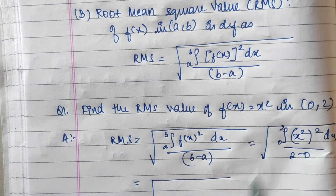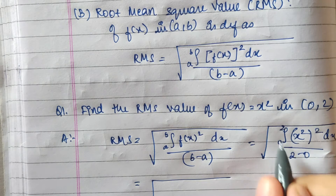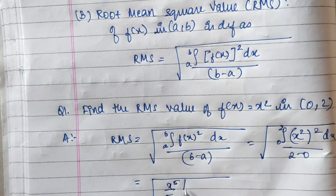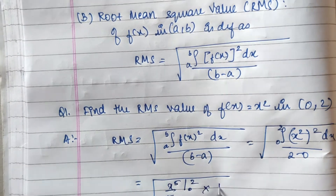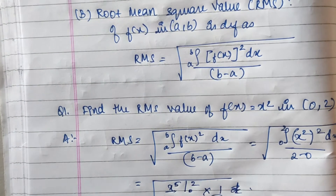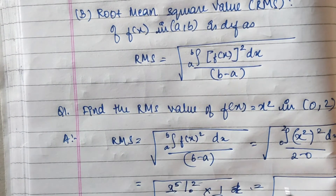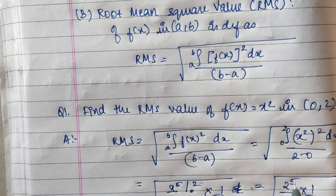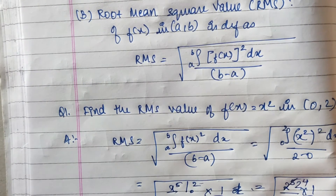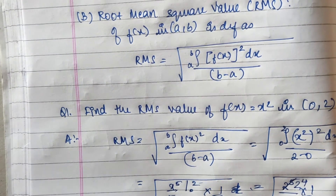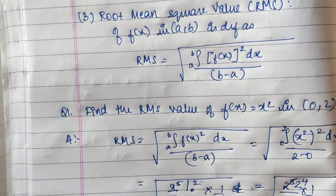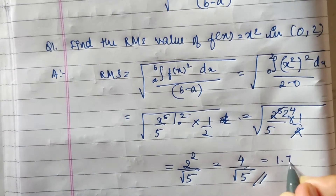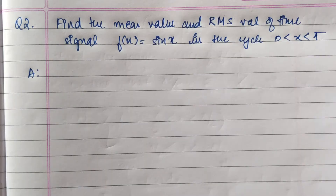Evaluating the integral: the integral of x⁴ is x⁵/5, evaluated from 0 to 2, divided by 2. Substituting the limits gives 2⁵/5 × (1/2). This simplifies: 2⁵ divided by 5×2 = 2⁴/5, and taking the square root gives 2² / √5 = 4/√5, which equals approximately 1.789.